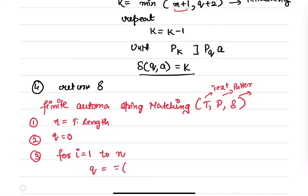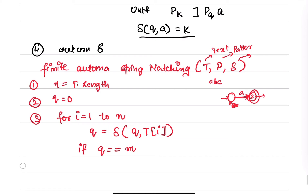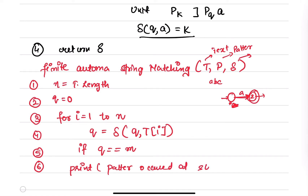For iterating i from 1 to n, q will change to δ(q, T[i]) — that is, taking the current text character as input. For example, if the text is 'abc', you check each character and see where it leads in the automata. If it reaches a final state, you print the result. If q equals m, you have reached the final state — print that the pattern occurred at shift i minus m.